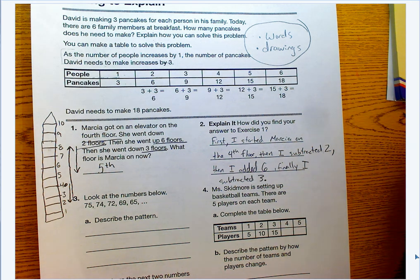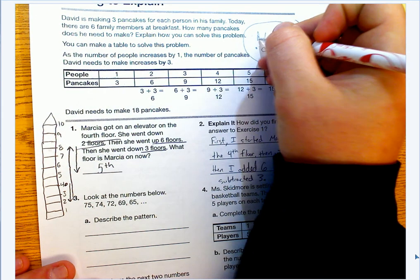Now you need two main things when you're explaining things: you need words, and you need drawings.